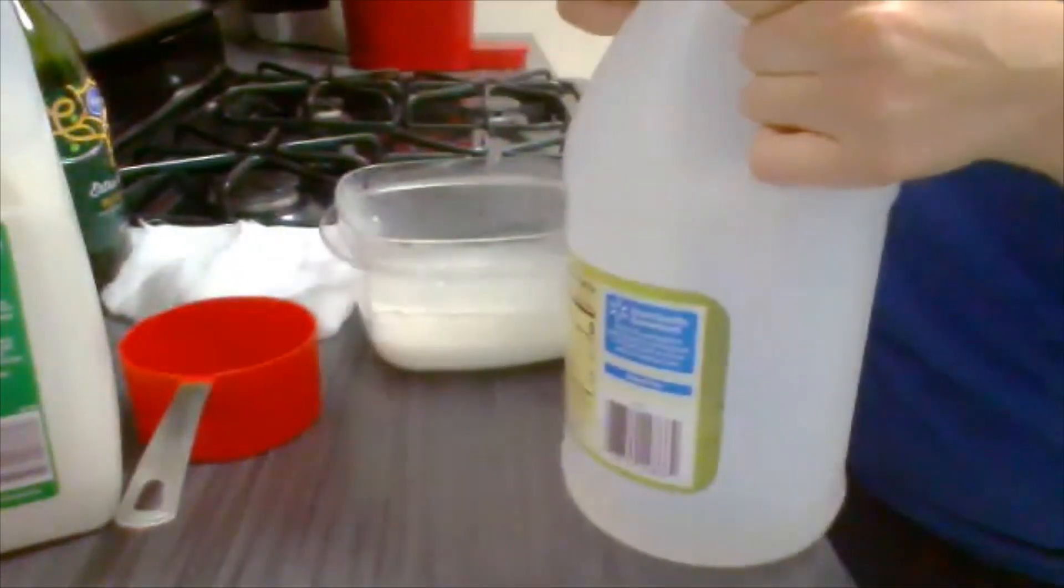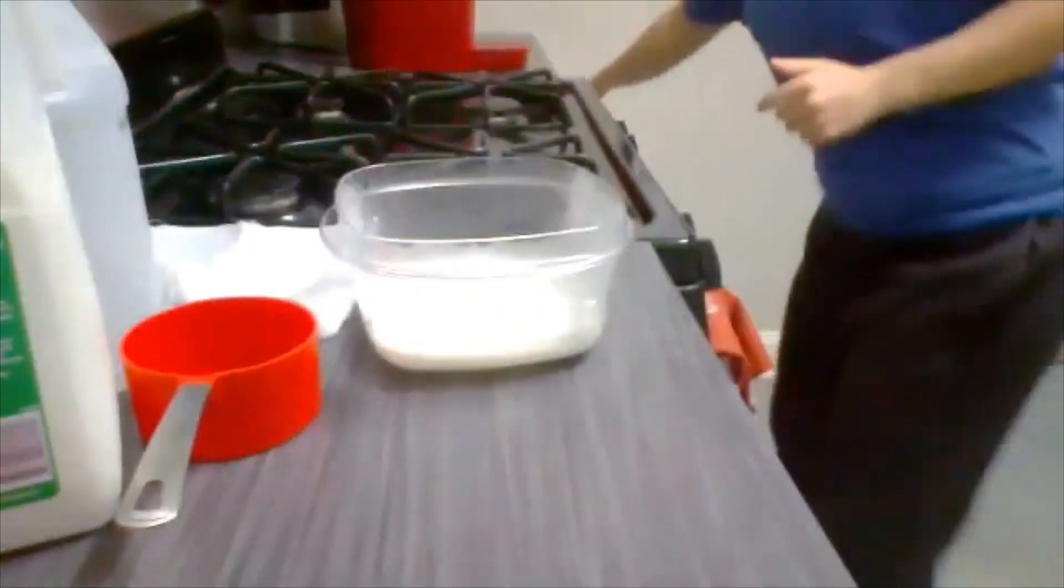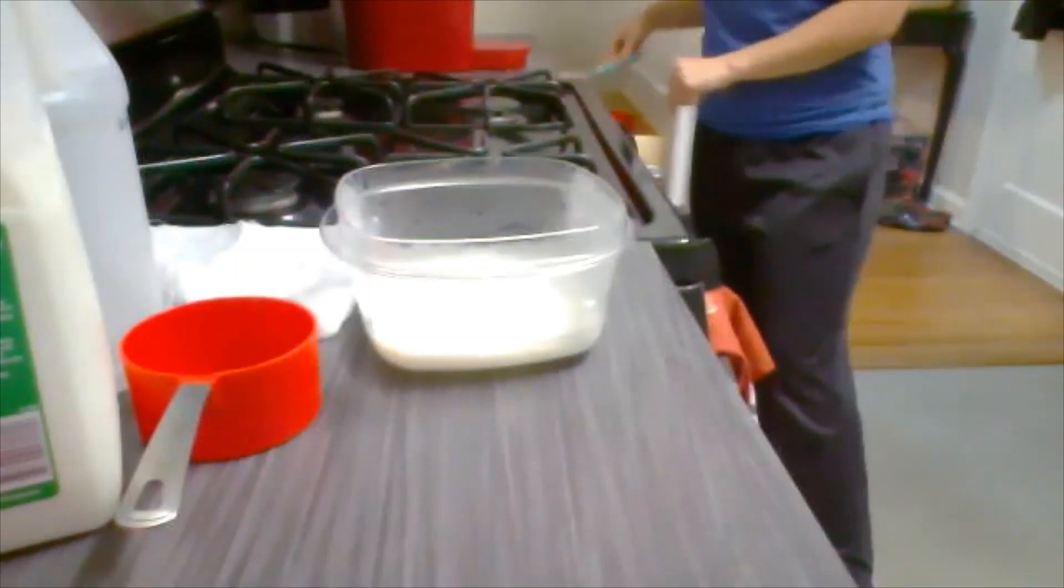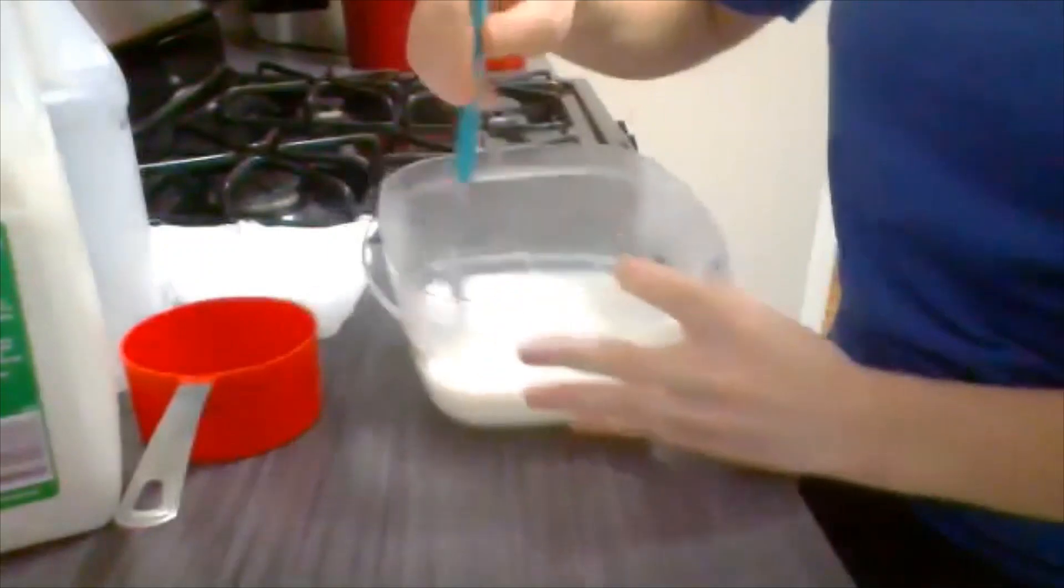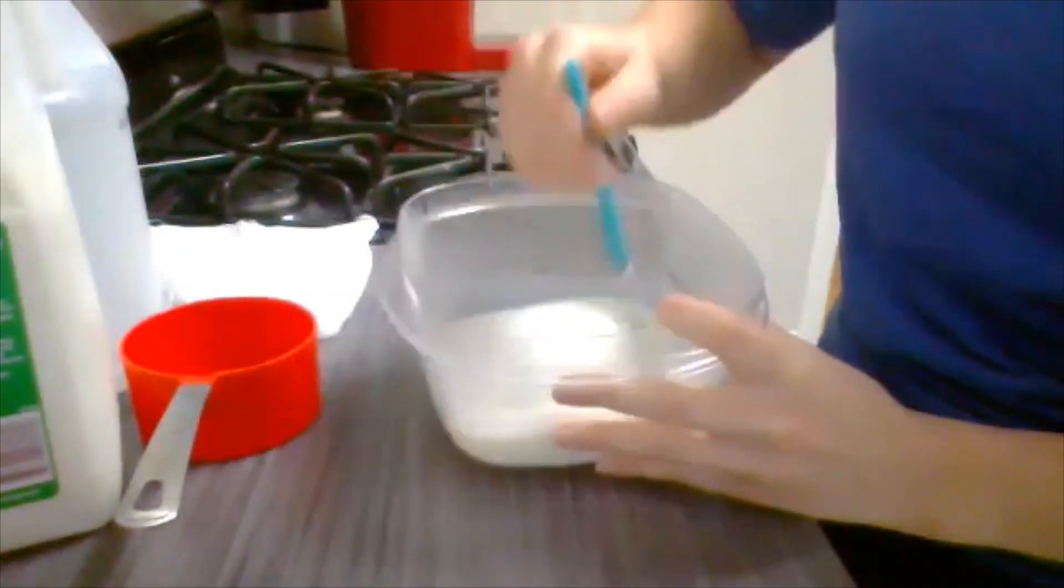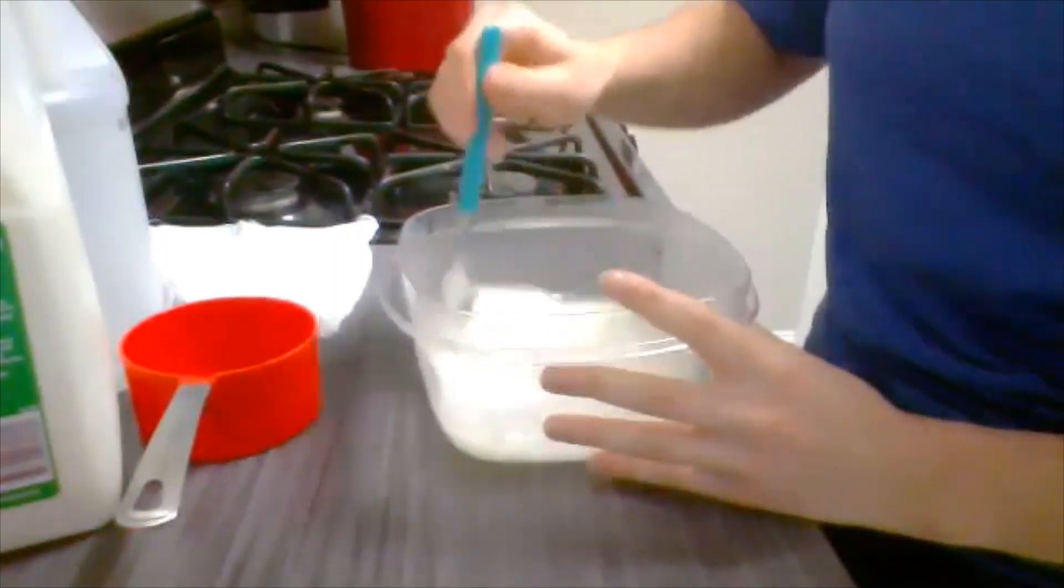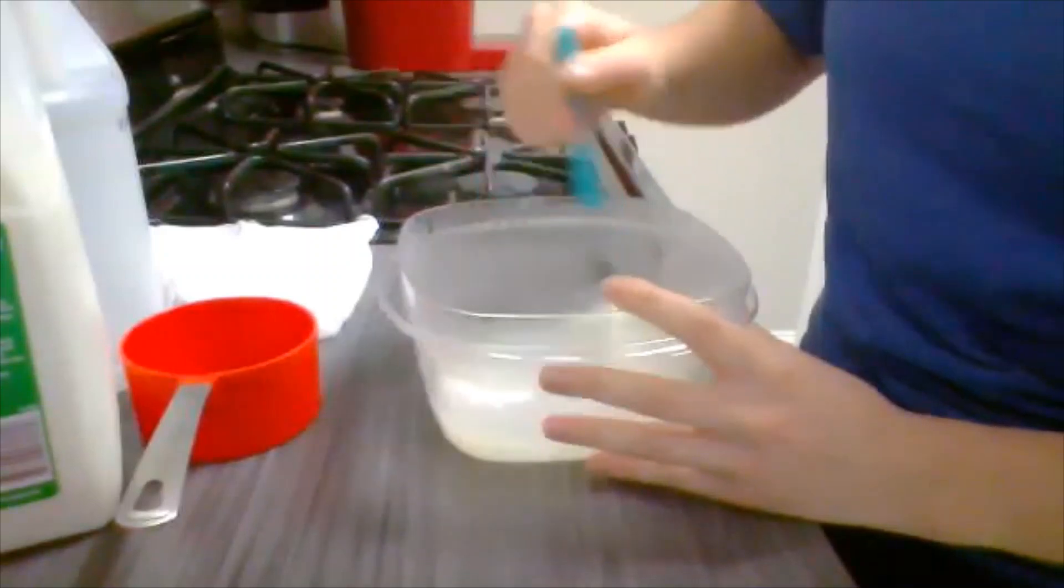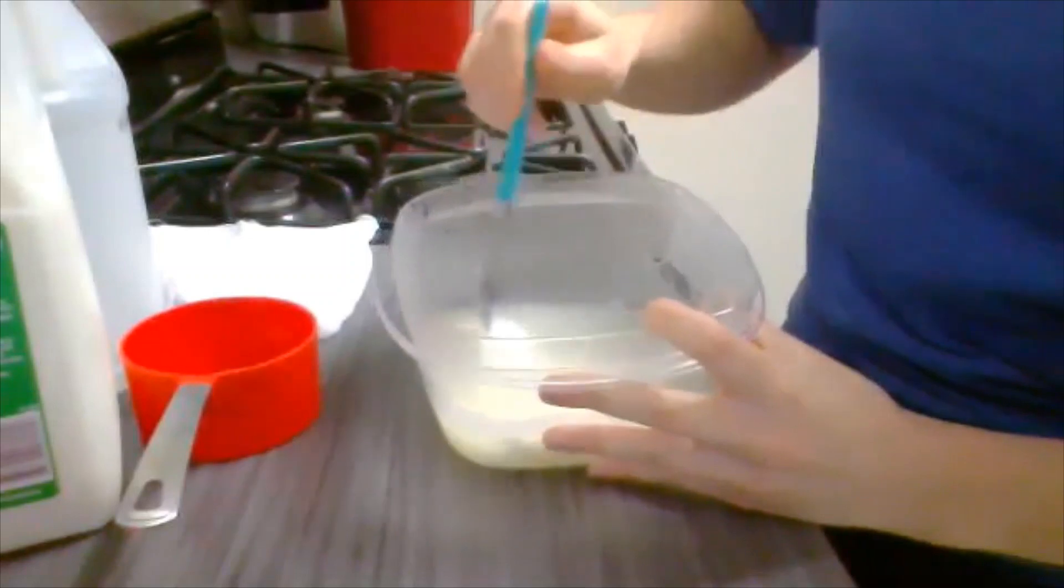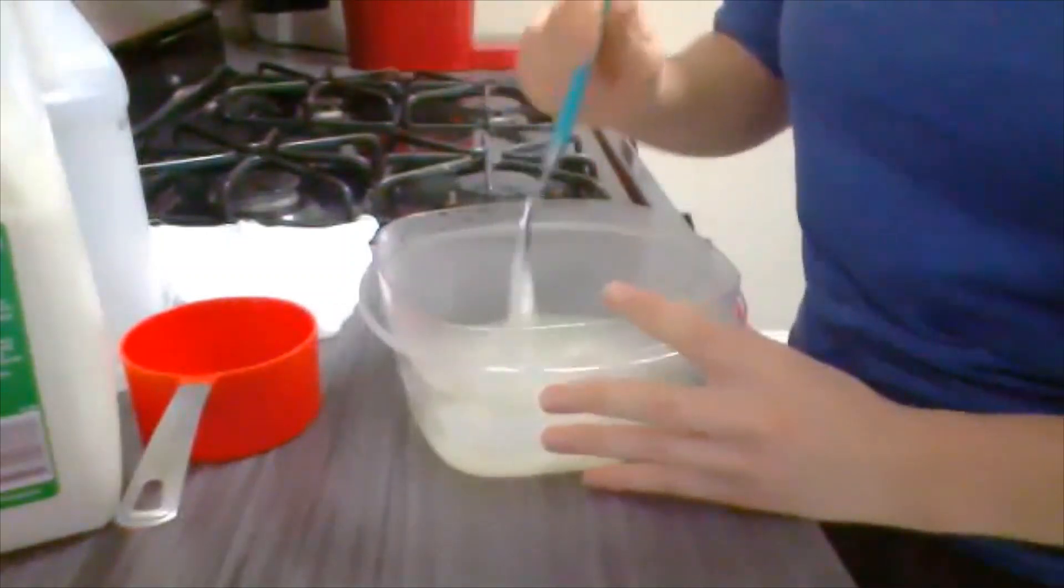After you pour in the vinegar, you will instantly see your mixture start to change. I'm going to go ahead and grab my spoon and just stir it up. You'll start to see a white yellow mixture—there will be a yellow liquid with this white sort of goopy substance. That white substance is actually our protein, which is what we are going to make our polymer out of.